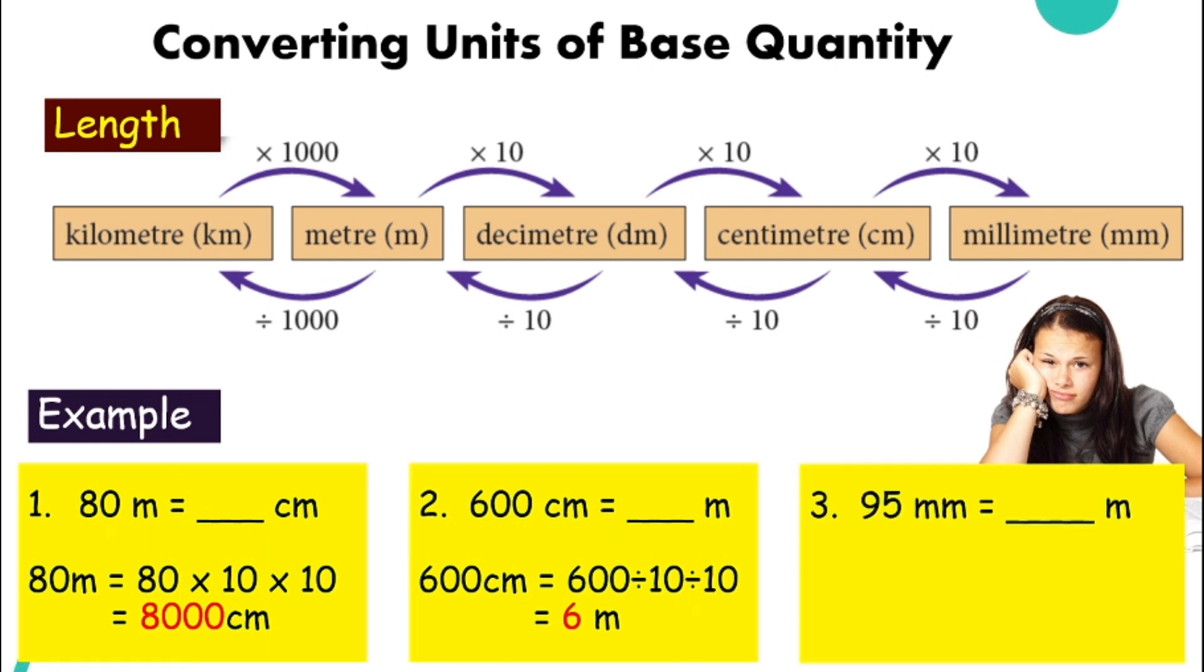One more. How about 95 millimeter go all the way to meter? How many steps do we need? That's right, three. So 95 divided by 10, divide by 10, divide by 10 to finally reach meter. And the answer will be 0.095 meter. It's not that difficult, is it?